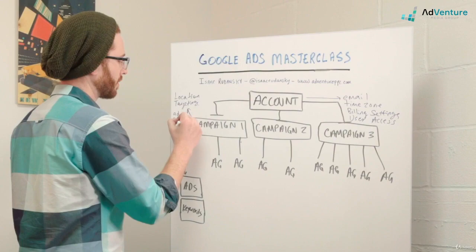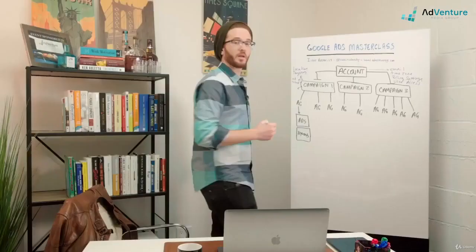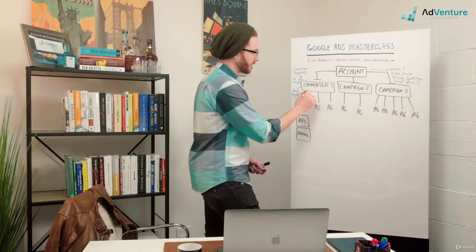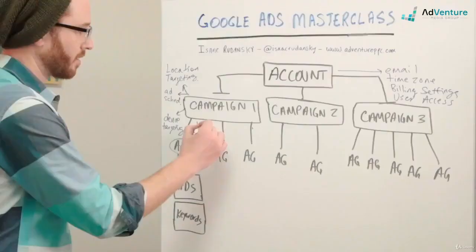At the campaign level, you're also dealing with device targeting. There are certain settings that are available at both the ad group and the campaign level, such as audience targeting settings and we'll talk about audience targeting settings in a few lectures from now and what audience targeting means.